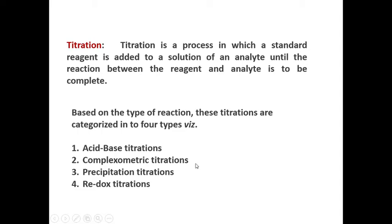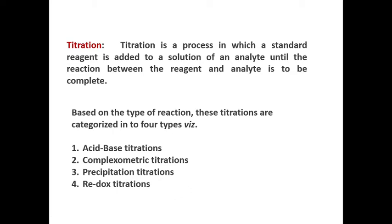Complexometric titrations involve the formation of a complex from a metal and ligand. The end point is determined using complexometric indicators; for EDTA titrations, the usual indicator is Eriochrome Black T. In redox titrations, we observe the reduction and oxidation process of oxidizing and reducing agents. The end point is determined using redox indicators such as diphenylamine, and in some cases auto-redox indicators are used.